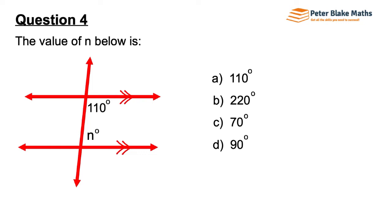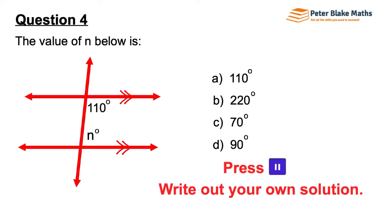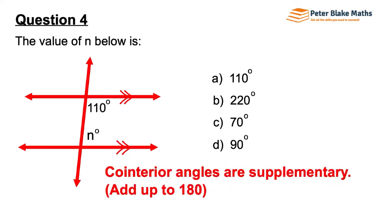Question 4. The value of N below is 110 degrees, 220 degrees, 70 degrees, or 90 degrees. These are in co-interior positions — they're together inside that section there — and co-interior angles are supplementary, which means they add up to 180 degrees.